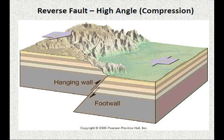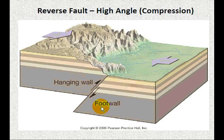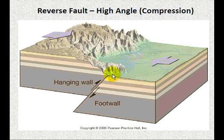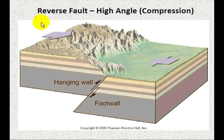What happens when you have compression occurring? You have something referred to as reverse faulting. In reverse faulting, you're compressing things together and the hanging wall is going to move up relative to the foot wall. So unlike the normal fault where the hanging wall went down, in this case the hanging wall is going up. When that happens along a high-angle fault, you have what's referred to as a reverse fault — this is what happens when you get compression in an area.